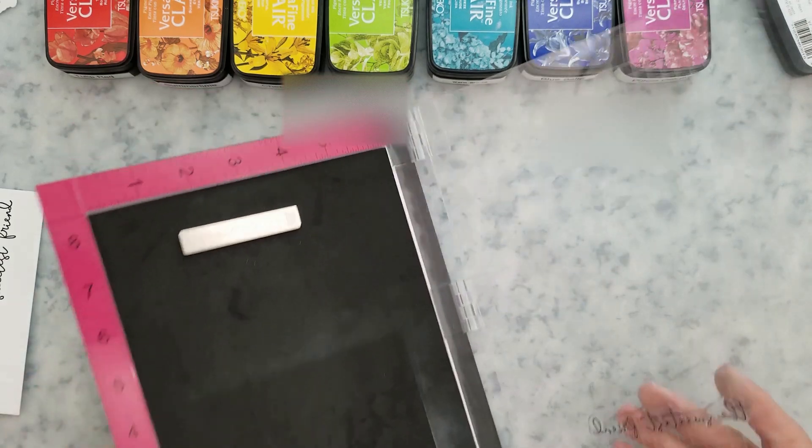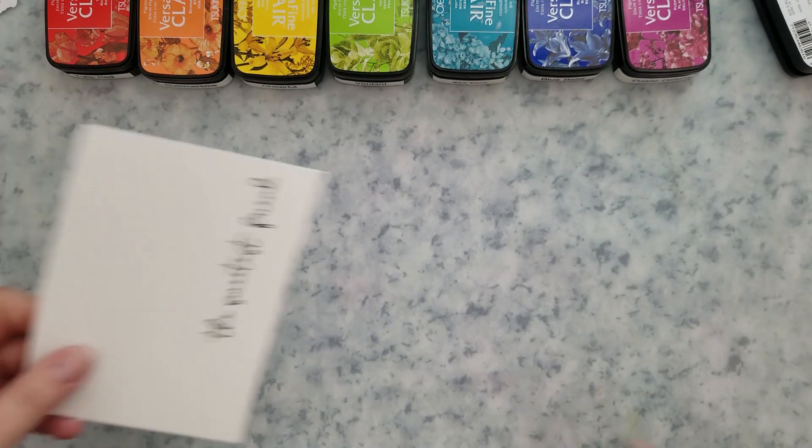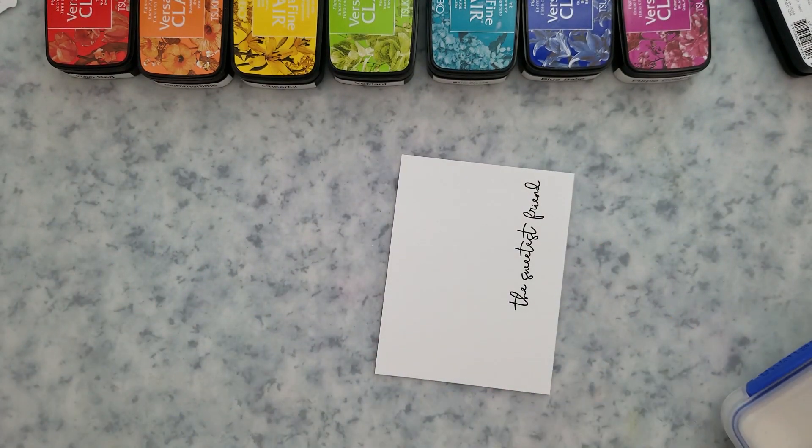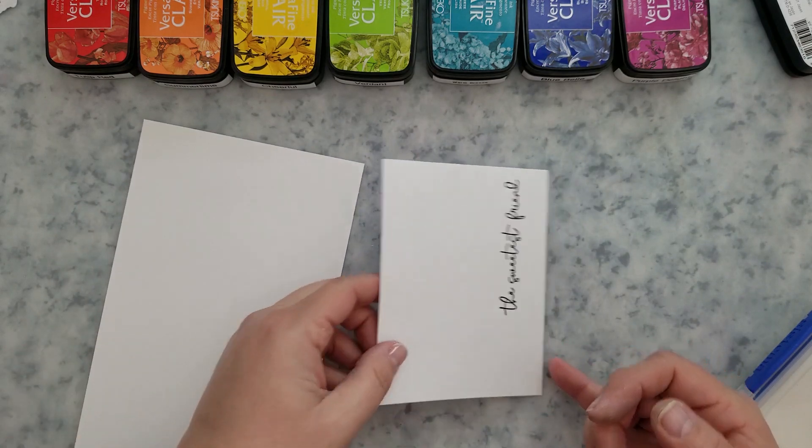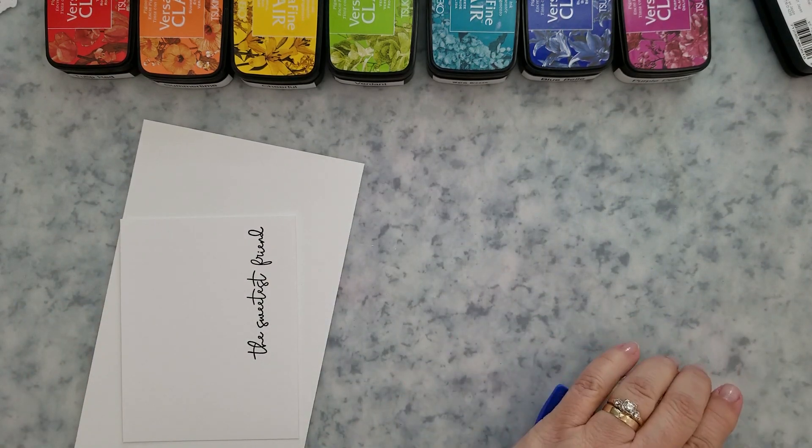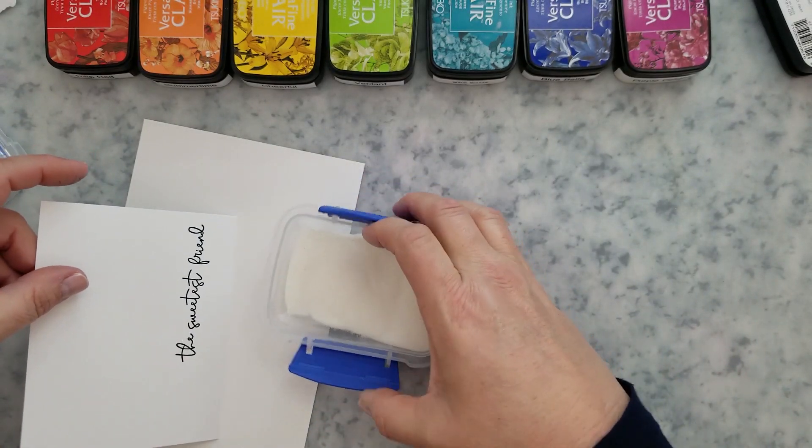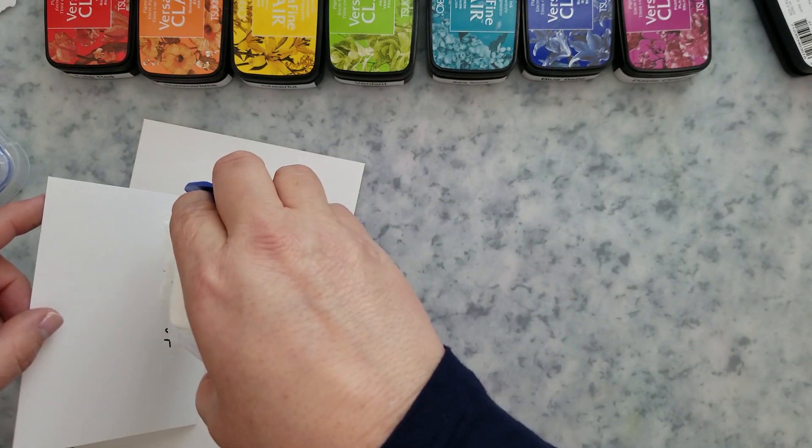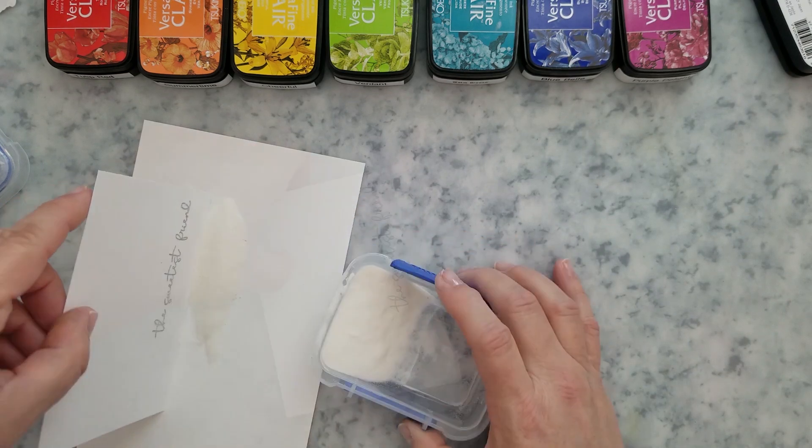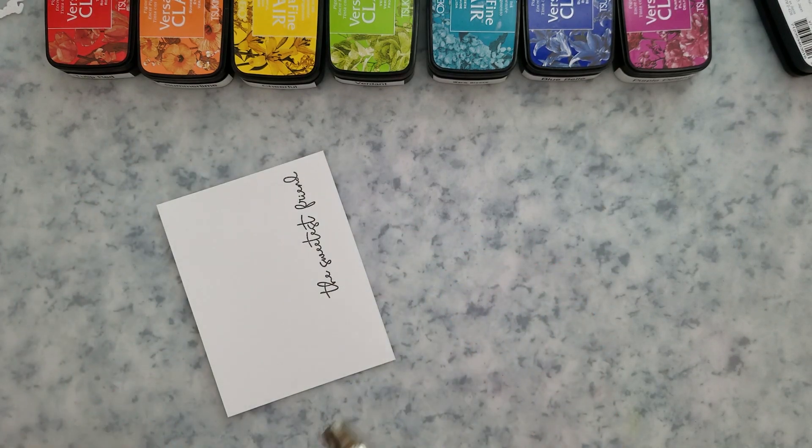Two of the sentiments I'm going to stamp with Versafine Clair Nocturne ink and heat emboss those with clear embossing powder. The others I'm stamping using Versafine Clair Cheerful ink and I'm going to heat emboss those with gold embossing powder.